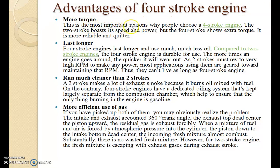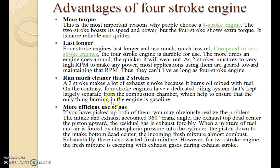Advantages of the four-stroke engine. More torque — this is the most important reason why people choose a four-stroke engine. The two-stroke boosts its speed and power, but the four-stroke delivers extra torque. It is more reliable and quicker, and it lasts longer. The four-stroke engine runs much cleaner than the two-stroke engine. A two-stroke makes a lot of exhaust smoke because it burns oil mixed with the fuel. On the contrary, the four-stroke engine has a dedicated oiling system that keeps oil largely separate from the combustion chamber, ensuring that what burns in the engine is gasoline. The four-stroke engine is also more efficient.